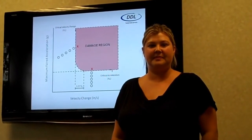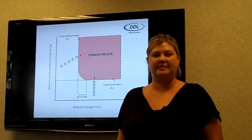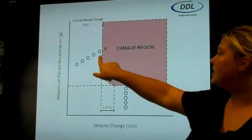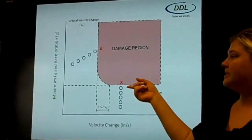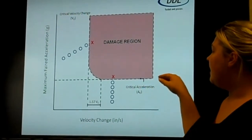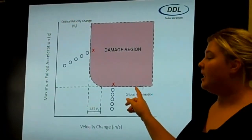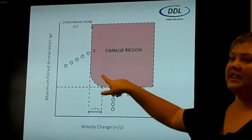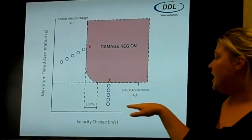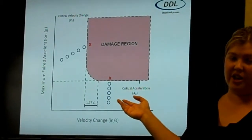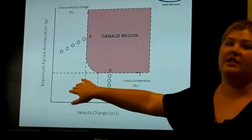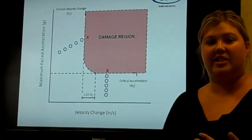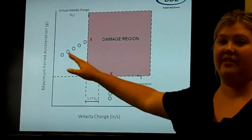What type of data is collected for this test, and what will the results help determine for the customer? From this test, you'll get a damage boundary curve. It takes the data from Test Method A — the velocity change to critical velocity — and the maximum achieved acceleration change from Test Method B. These two lines get plotted, and then you'll get a damage region. If your product sees an acceleration and velocity combination in that region, there's likely to be failure. If it's in the unshaded region, no damage is likely to occur. The parameters this is dependent on are the shock pulse shape, the acceleration, and the velocity changes.